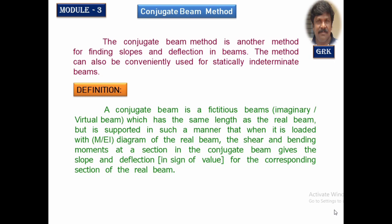By definition, the conjugate beam is a fictitious beam, an imaginary beam, which has the same length as the real beam, but is supported in such a manner that when it is loaded with the M/EI diagram of the real beam, the shear force and bending moment at any section in the conjugate beam give the slope and deflection for the corresponding section of the real beam. The load acting on this virtual beam will be the area of the M/EI diagram developed by the real beam.